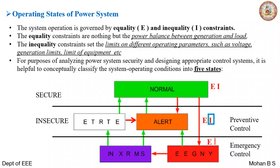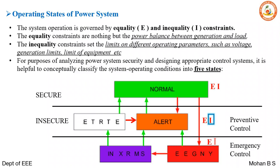Emergency control actions must be taken in the emergency state; otherwise the system will move to extreme emergency. If emergency control actions are not taken, it moves to extreme emergency. If they are taken, it moves back to alert state, and from there on to normal state.